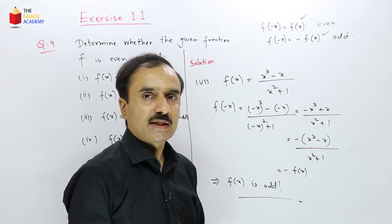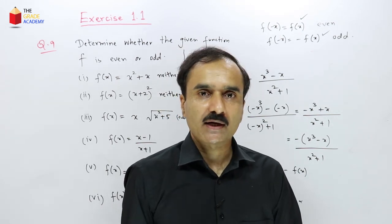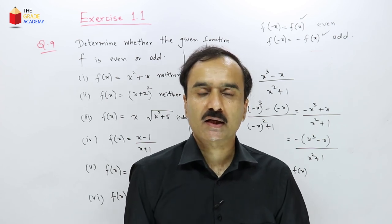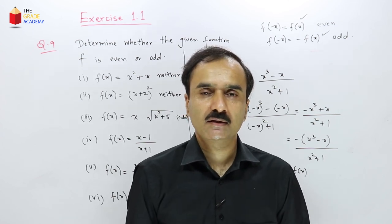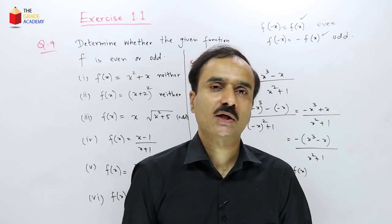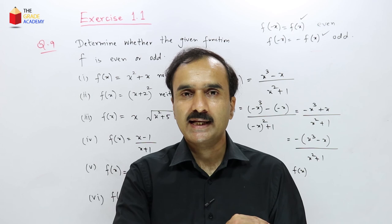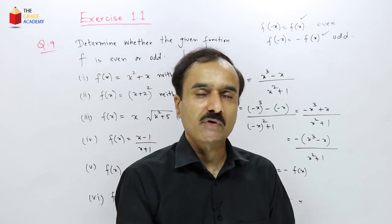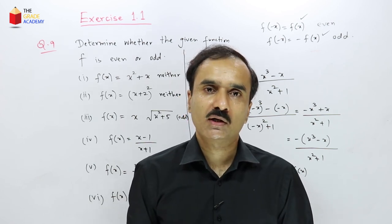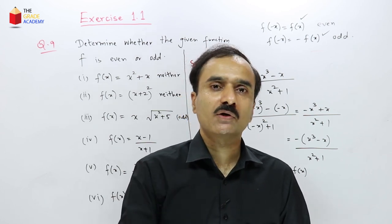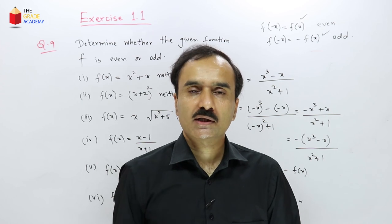Summary of the method: to check if a function is even or odd, substitute −x for x. If you get back the original function, it is even. If you get the negative of the original function, it is odd. Otherwise it is neither. For polynomial functions with whole-number powers, you can quickly check by looking at the powers: all even → even function; all odd → odd function; mixed → neither.